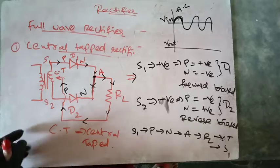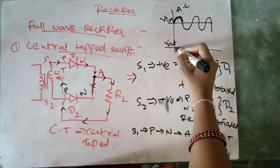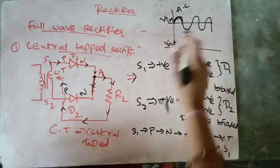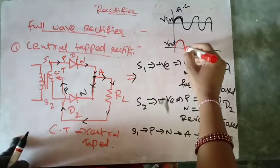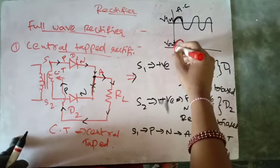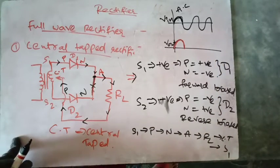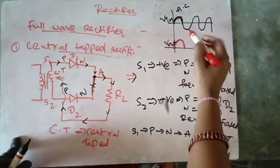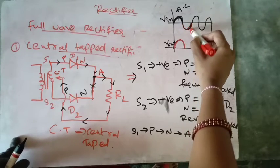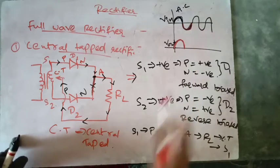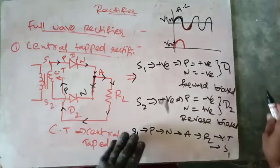There will be a positive output voltage for this first half cycle. Now let's see what happens when we take the negative half cycle.